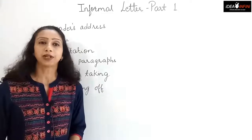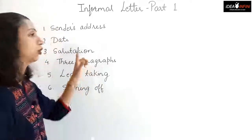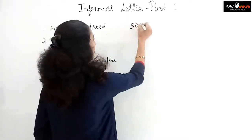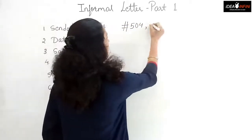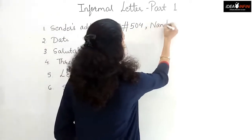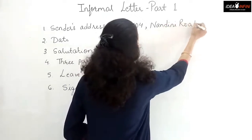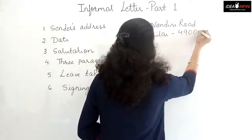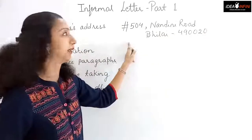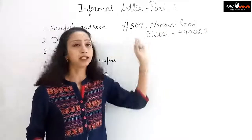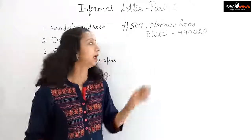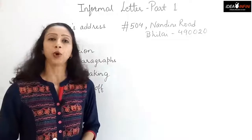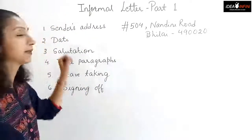We start with the sender's address from the top left-hand corner. Suppose your address is house number 504, Nandini Road, and the name of the city. The pin code is also there and you must write the pin code. So this is how you write the address: house number, then the street, maybe the area, then the city, and then the pin code. This is how you write the sender's address from the top left-hand corner always.